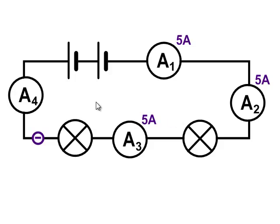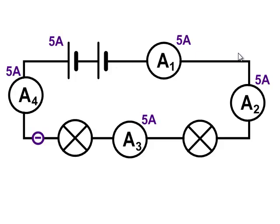If someone said what's the current through the first cell, you'd say well it's a series circuit, the current is 5 amps. What's the current through ammeter A4? The current is 5 amps. The current is the same everywhere in a series circuit, because the electrons have no choice — they have to flow through each part of the circuit, and none of the electrons get to escape. So they all flow through every single part of the circuit just the same.